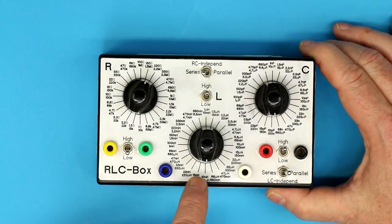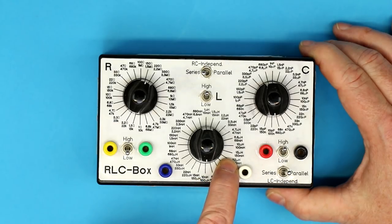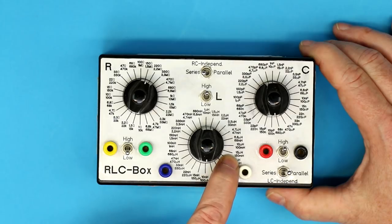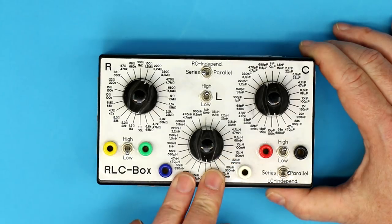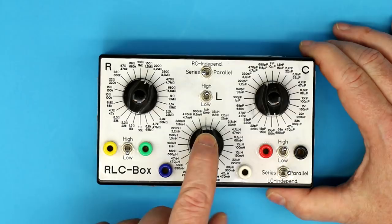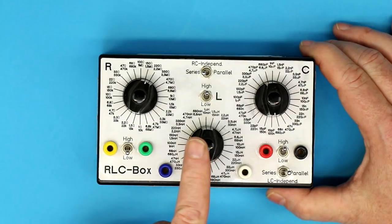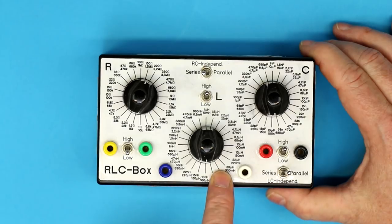So the inductors go from 10 nanohenries up to 150 millihenries. We can't get any further, because finding inductors above 100 or 150 millihenries is quite difficult, at least in a size that fits into this box. So the inductor range is limited to seven decades, from 10 nanohenries to 150 millihenries.